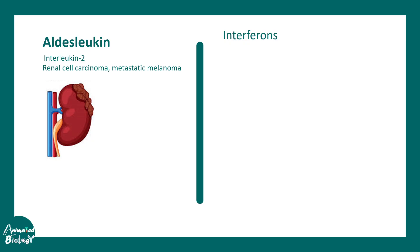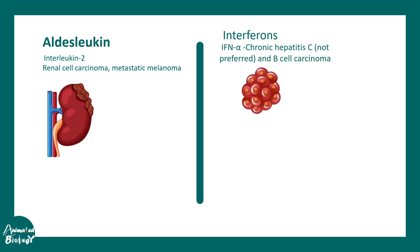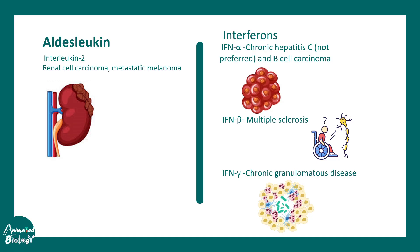Next, let's talk about some interferons. Before that, aldesleukin — which is interleukin-2 — is used greatly in the context of renal cell carcinoma and metastatic melanoma. Interferon alpha is used for hairy cell carcinoma — it should be noted it is not used for hepatitis C. Interferon beta is used in the treatment of multiple sclerosis. Interferon gamma is used in cases of chronic granulomatous disease (CGD).